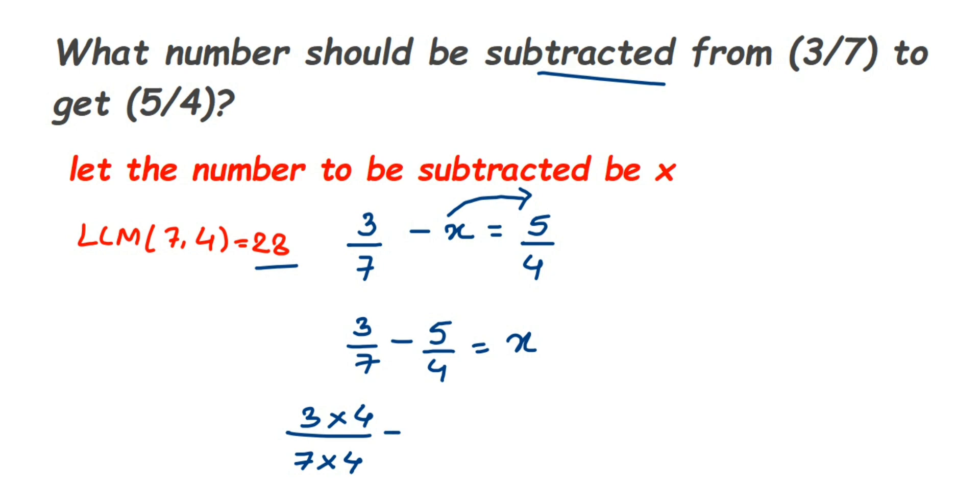Then the next we have 5/4. Same thing: with 4, what should you multiply to get 28? It is 7, so multiply 7 in the numerator and denominator.